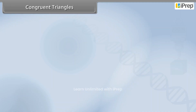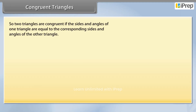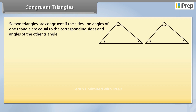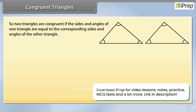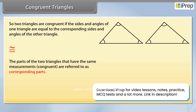Congruent Triangles. Two triangles are congruent if the sides and angles of one triangle are equal to the corresponding sides and angles of the other triangle. This is the sign of congruency. The parts of the two triangles that have the same measurements, congruent, are referred to as corresponding parts.